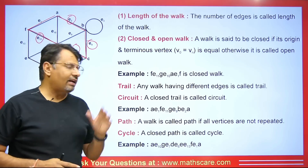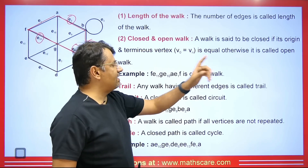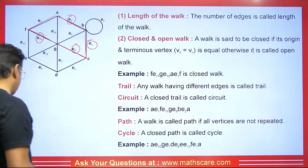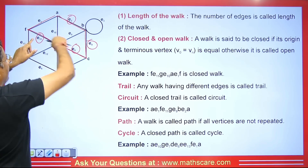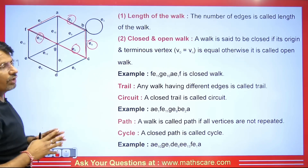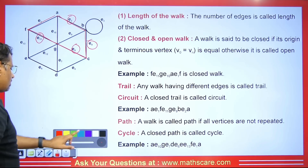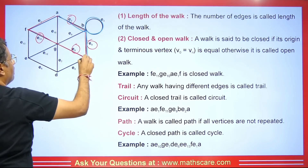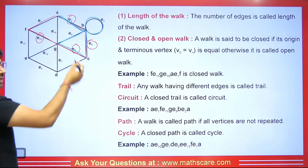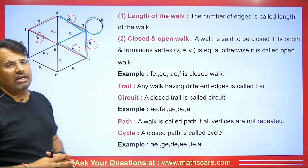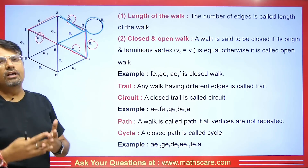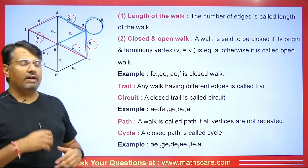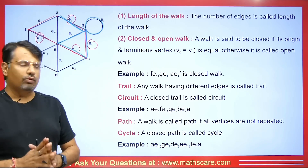Now let's talk about what is a trail. Any walk having all different edges is called a trail — meaning the edges should not repeat. Here you can see no edges are being repeated, so this walk is a trail. If I take a different walk where an edge is repeated, then that is not a trail. Where an edge occurs only once within the walk, we have a trail.